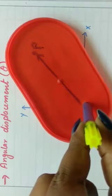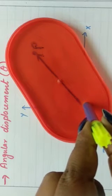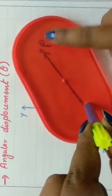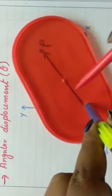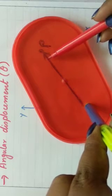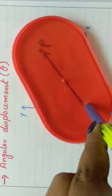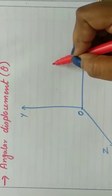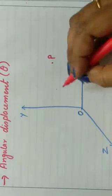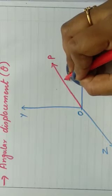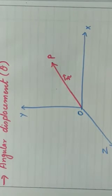So z-axis is the axis of rotation. Suppose this is one particle P on this rigid body. Then this vector represents the position vector of this particle at a given time. So suppose this is particle P and its position vector is vector R. This is the position vector — this is the position of this particle.